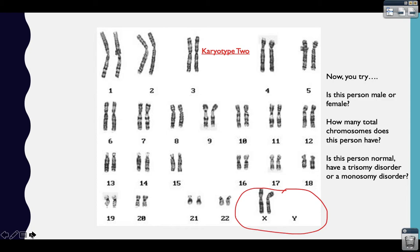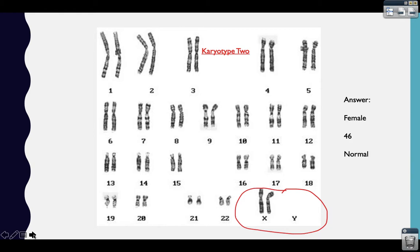Now let's take a look at another karyotype — it's your turn to try this on your own. First, figure out if the person is male or female by looking at the last set of chromosomes. Then count the total number of chromosomes and determine if this person is normal, has a trisomy, or has a monosomy. After pausing to work it out: this person has two chromosomes over the X position and nothing on the Y position, so this person is a female. Counting by twos gives 46 total chromosomes, so this person — at least with regard to chromosome number — is normal: a female with 46 chromosomes.